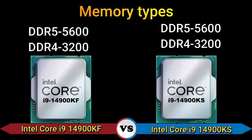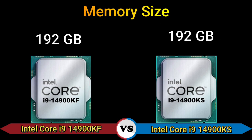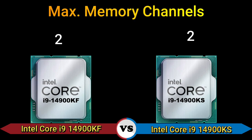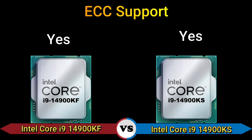Memory types: DDR5-5600 and DDR4-3200. Memory size: 192 GB. Max memory channels: 2. Max memory bandwidth: 89.6 GB/s. ECC support: yes.